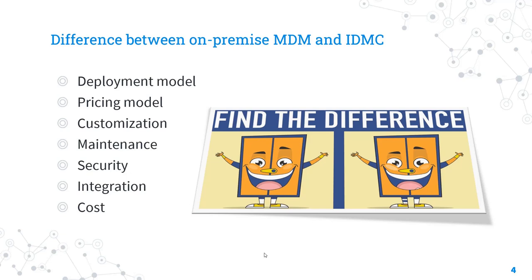Security is another factor available in both versions. On-premise Informatica MDM offers advanced security features, allowing customers to control access and ensure regulatory compliance. However, with IDMC, customers need to trust Informatica with the security of their data. Informatica has a strong security track record, but some customers — particularly in banking and government industries — may prefer more direct control over their data security.